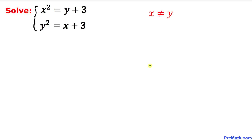Welcome to pre-math. In this tutorial we have got a system of two equations and we are going to solve this. We have x squared equal to y plus 3 and the second equation is y squared equals to x plus 3, and make sure that x is not equal to y.